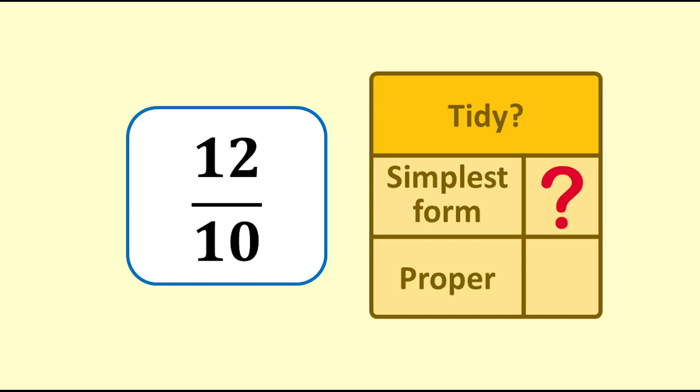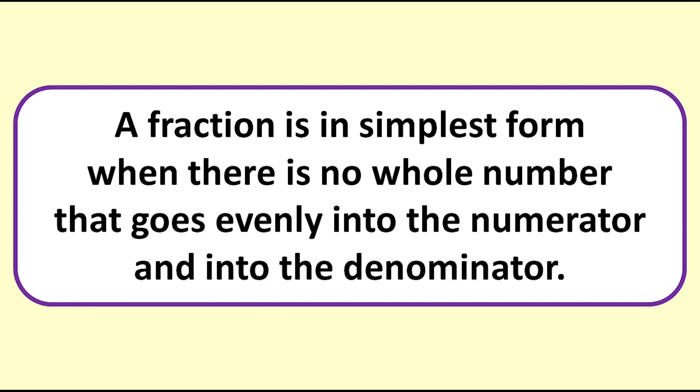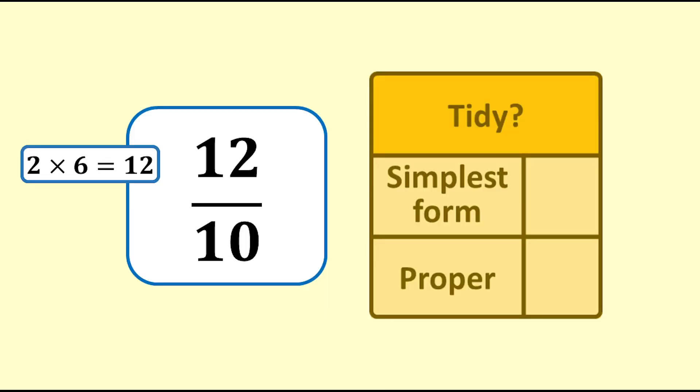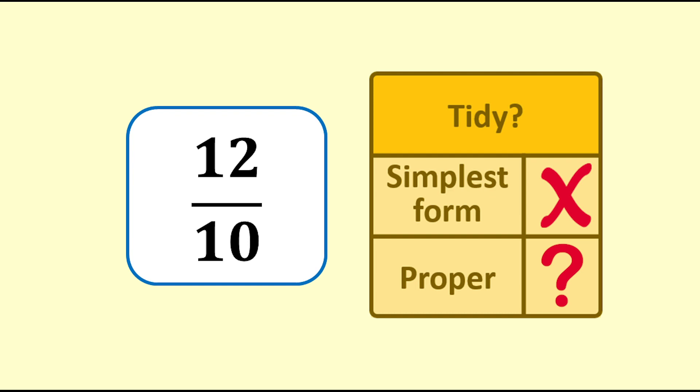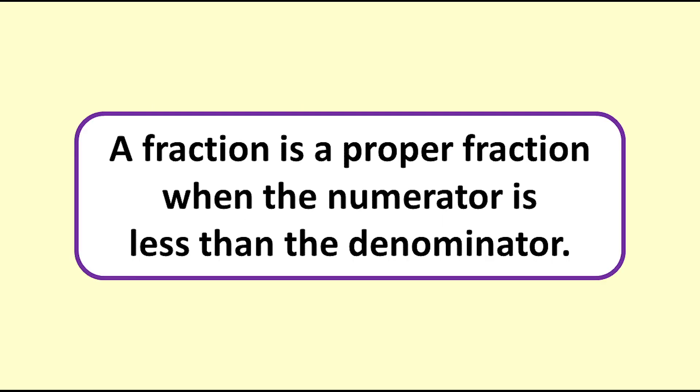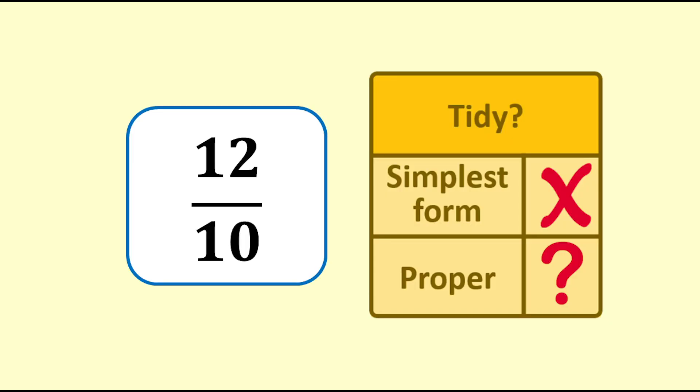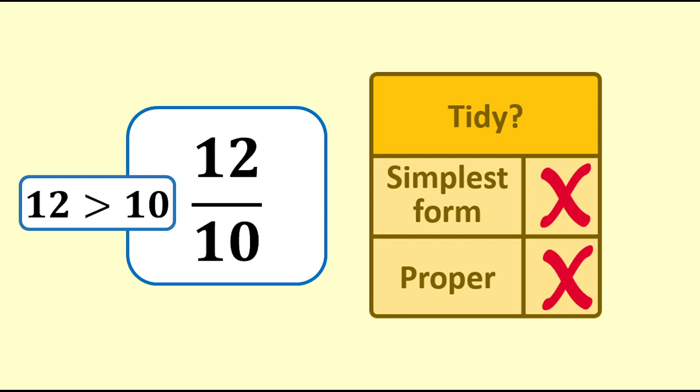Is 12 tenths in simplest form? A fraction is in simplest form when there is no whole number that goes evenly into the numerator and into the denominator. 12 tenths is not in simplest form as 2 goes evenly into 12 and into 10. Is 12 tenths a proper fraction? A fraction is a proper fraction when the numerator is less than the denominator. For 12 tenths the numerator, 12, is greater than the denominator, 10, so this is an improper fraction. Let's tidy it up.